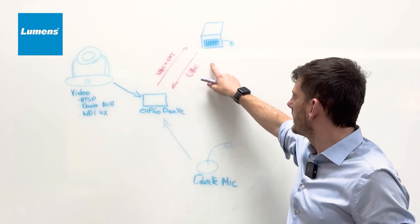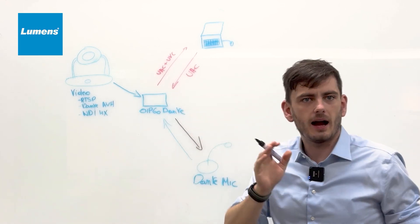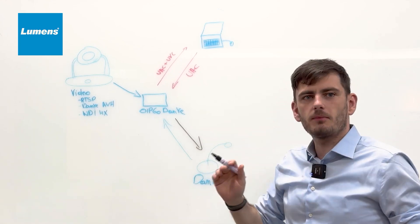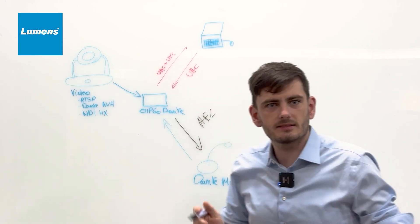So keep in mind, we get it in over USB. We convert it back to IP and we can send that reference line back to the microphone and it can use its own acoustic echo cancellation.